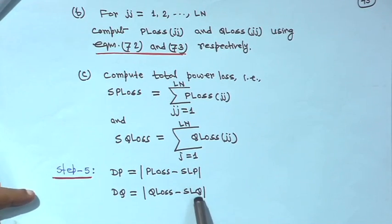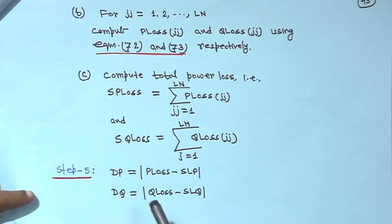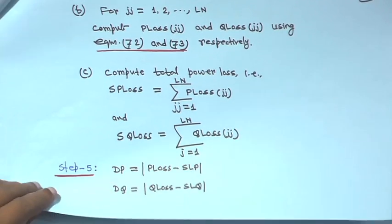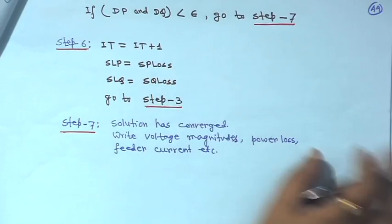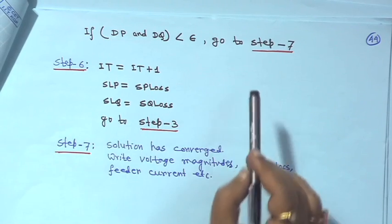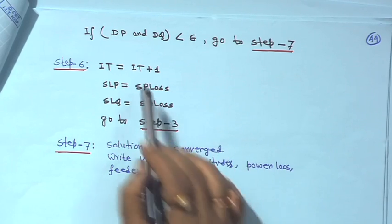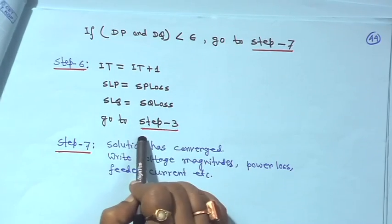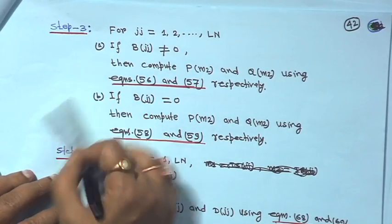Initially total loss is set to 0. The difference DP equals absolute of P loss minus SLP, and DQ equals absolute of Q loss minus SLQ. If both DP and DQ are less than epsilon — a convergence criterion such as 10^-4 or 10^-3 — then go to step 7: solution has converged (voltage magnitude, power loss, etc.). Otherwise, increase iteration count by 1, replace SLP with SP loss and SLQ with SQ loss, and go back to step 3.